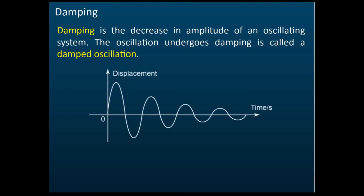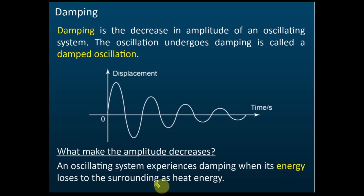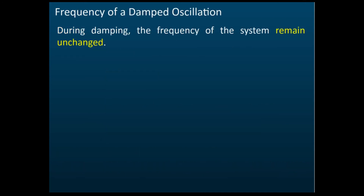Damping is the decrease in amplitude of an oscillating system, and oscillations that undergo damping are called damped oscillations. The amplitude decreases over time because the system loses energy to the surroundings as heat energy due to friction. Importantly, for damped oscillations, the frequency of the system remains unchanged — only the amplitude decreases over time.